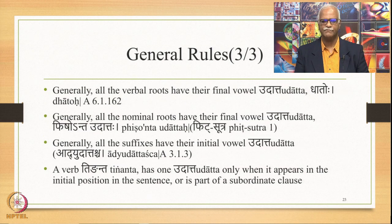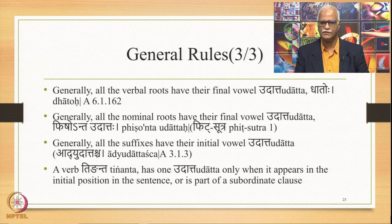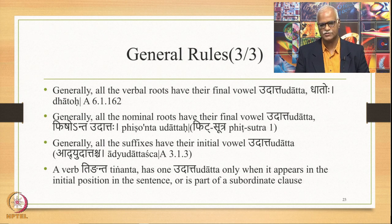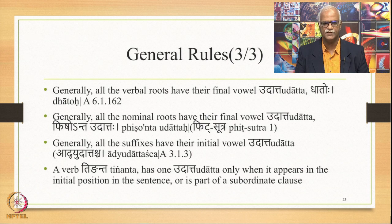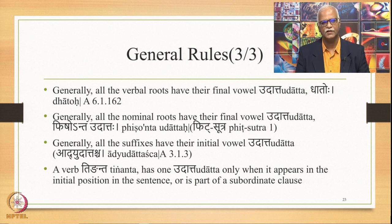For example, in Ramena Gramo Gamyate, Gamyate's vowels are all Anudhatta and come after the Swarita in Moh, therefore they become Ekashruti. But when these Anudhatta or Ekashruti vowels are followed by an Udhatta vowel in the next word, the final one among these Ekashruti is shown as an Anudhatta vowel with a horizontal bar below, to indicate that the next vowel is Udhatta. Generally all verbal roots have their final vowel Udhatta by Dhatohu. Generally all nominal roots have their final vowel Udhatta — this is the Fit Sutra. A verb which is a Tinganta has one Udhatta only when it appears in the initial position in the sentence or is part of a subordinate clause. These are the general rules governing the accents.